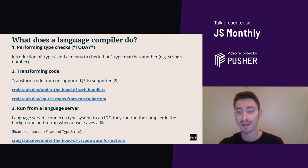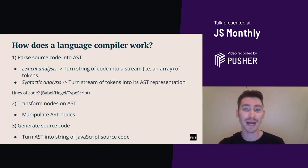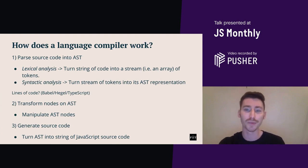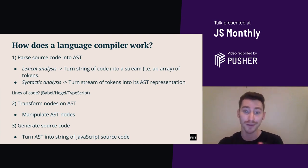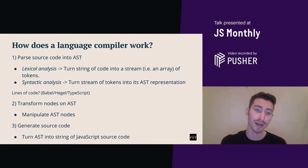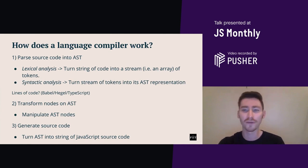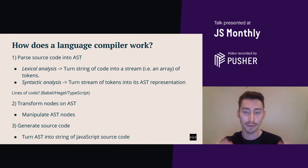As mentioned at the start, we're just going to be focusing on point one today — performing type checks. How does a language compiler work? There are three common jobs to most compilers in some form or another. Step one is where you parse the source code into AST. This involves lexical analysis — turning a string of code into a stream of tokens — and then syntactic analysis, where we turn our stream of tokens into its AST representation. Parsers are responsible for checking the syntax of the given code. A type system will typically have to house its own parser, often containing thousands of lines of code. Many of them are open source, like Babel and TypeScript.